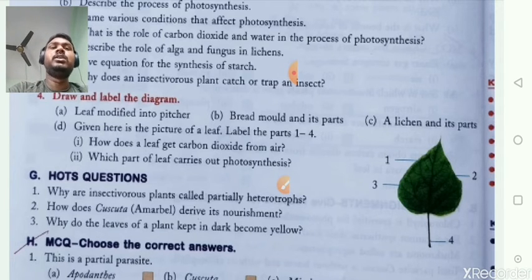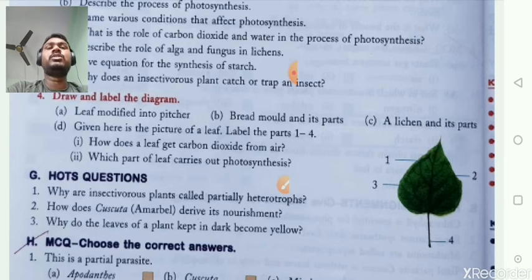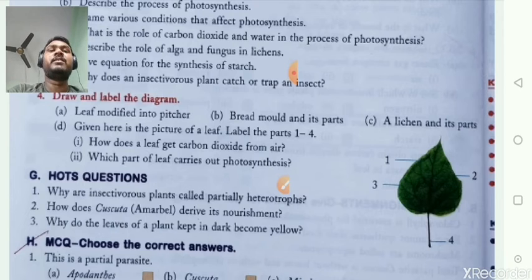How does a leaf get carbon dioxide from air? From the stomata. Which part of the leaf carries out photosynthesis? The lamina.